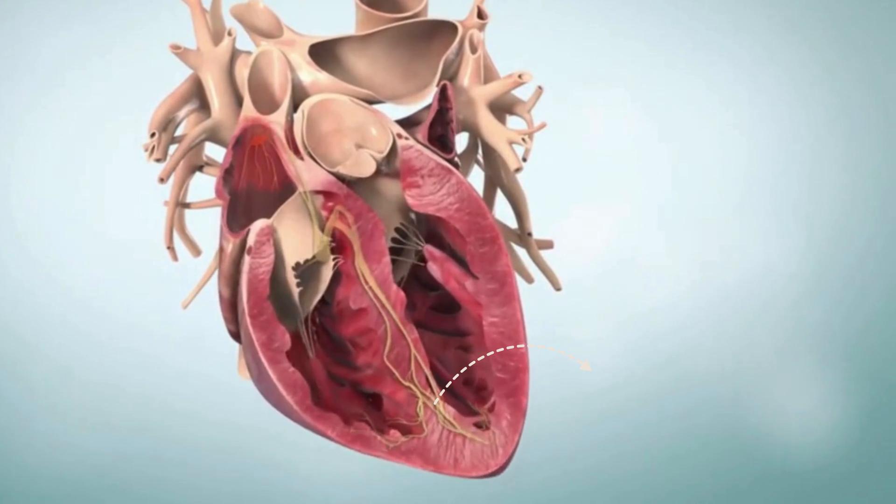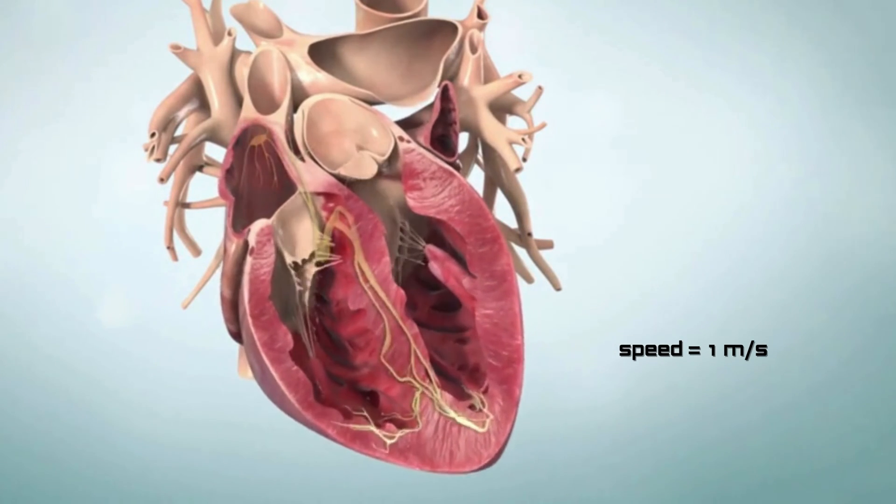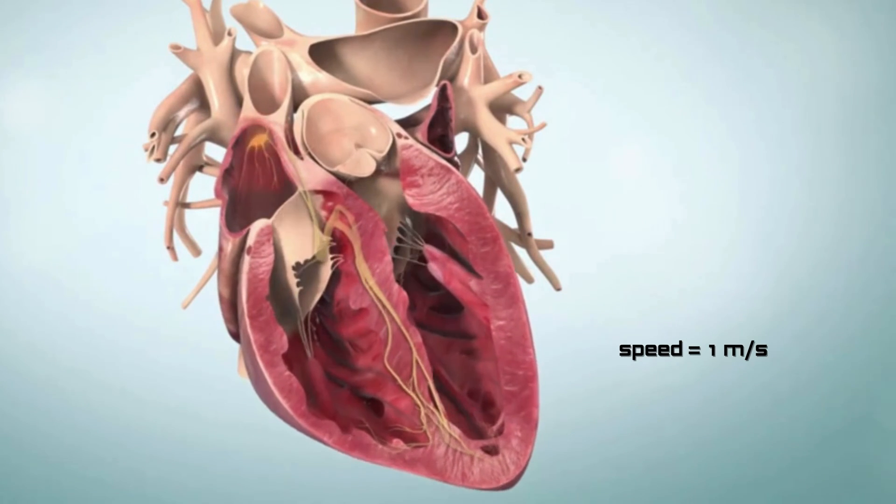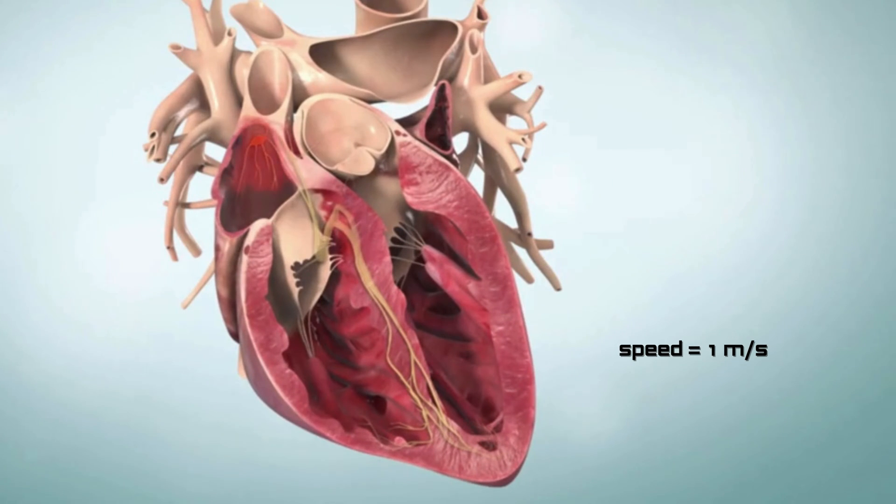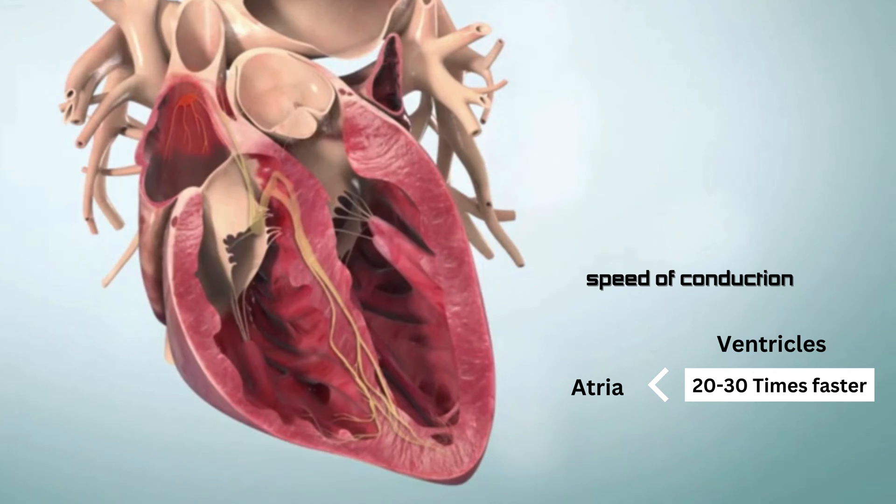And finally, the Purkinje fibers spread the impulse throughout the ventricles at a speed of approximately 1 meter per second. Remarkably, the conduction speed in the ventricles is about 10 to 30 times faster than that in the atria, ensuring efficient and coordinated contractions for effective blood circulation.